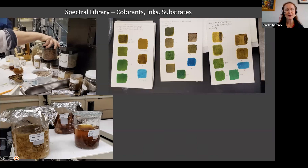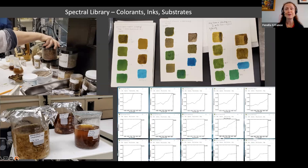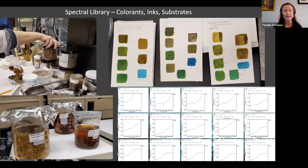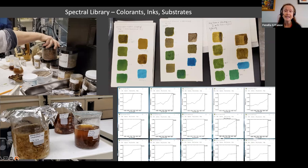One very interesting thing is how we build up historic recipes — pigments are not simple, and a lot of what we need to understand is how those are put together. My staff have made up a huge number of colorant sheets with different dilutions, different binders on different substrates, and we're now building up that spectral library. We're comparing multi- or hyperspectral data with fiber optic reflectance spectroscopy, and it's very important that we look at FAIR data principles — Findable, Accessible, Interoperable, and Reusable — because so much of our cultural heritage work is about international collaborations.